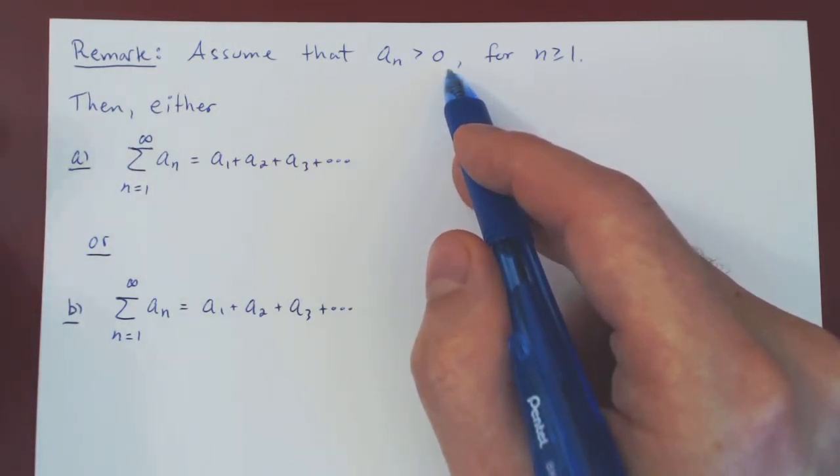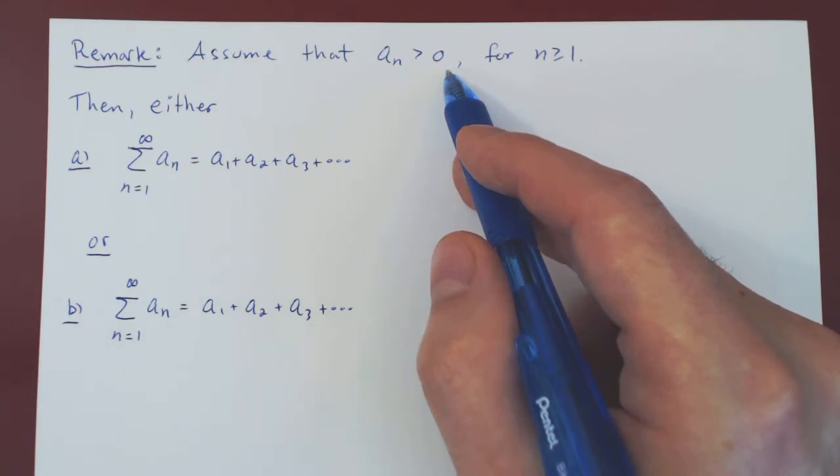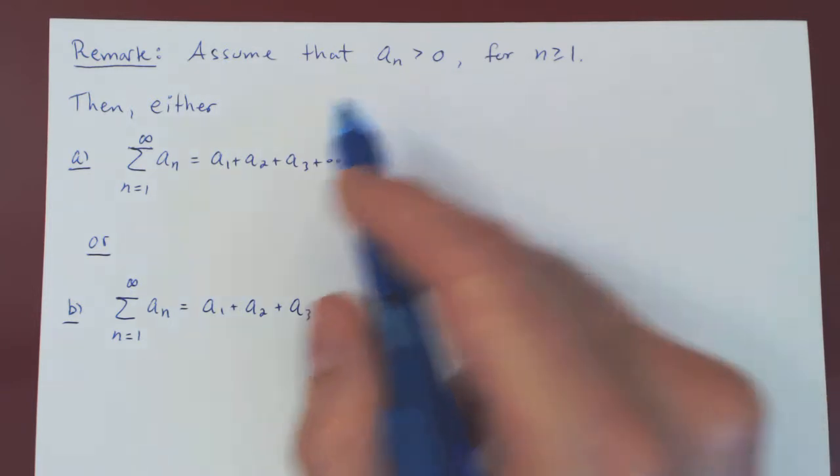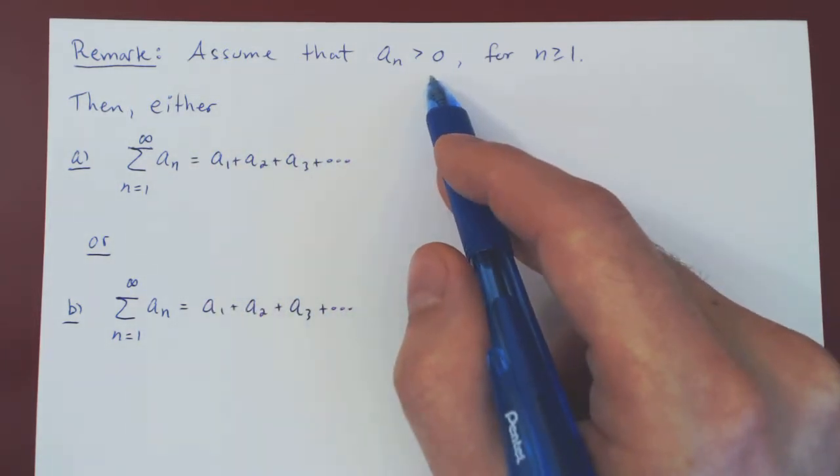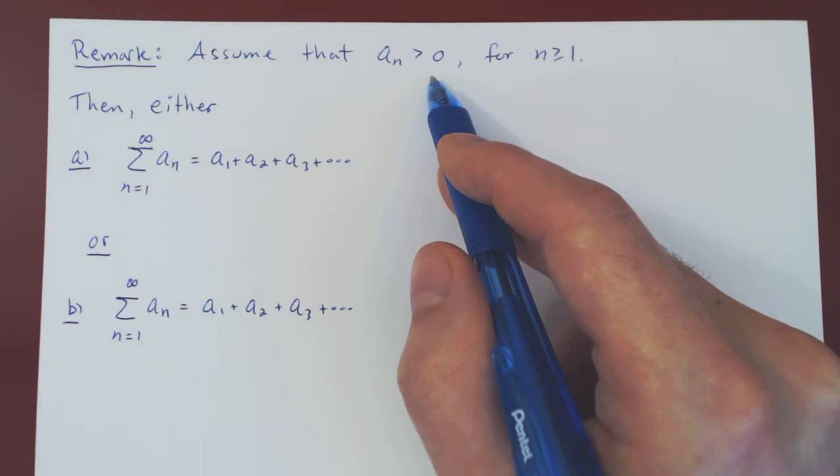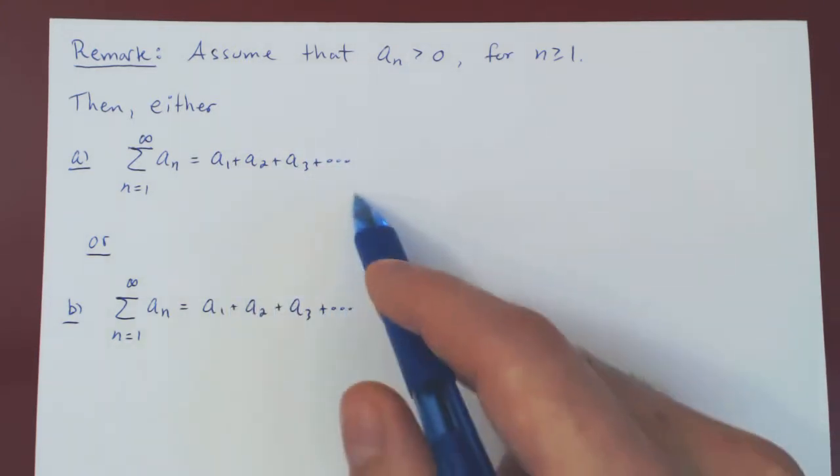We have already seen examples, and we'll see other examples later on, that when you have a series where some terms are positive, some terms are negative, there are several ways in which the series can diverge. What's nice about a series of positive terms is that it can only diverge in one specific way, and this will be the highlight of this remark.